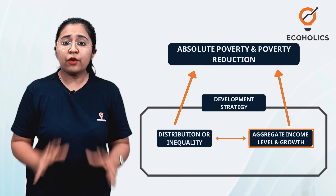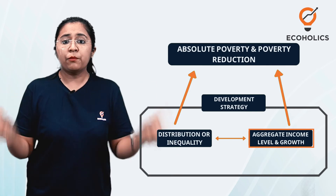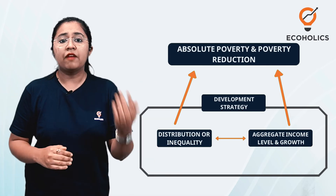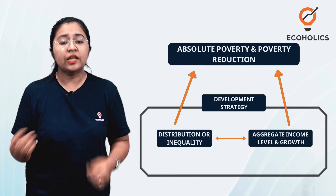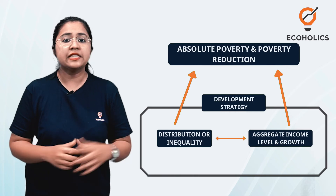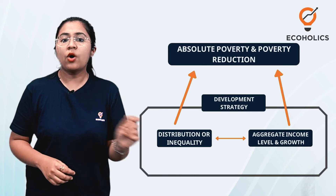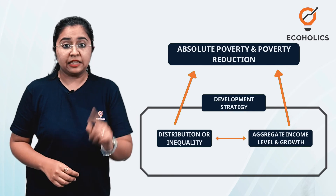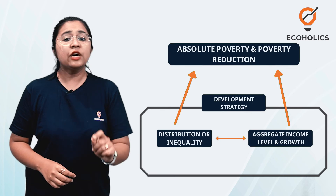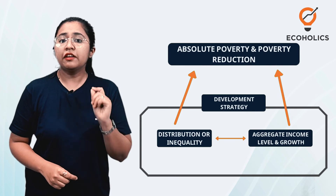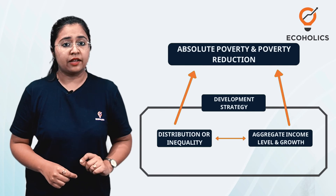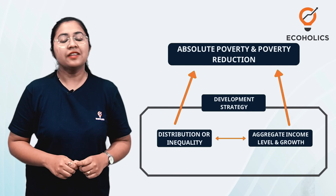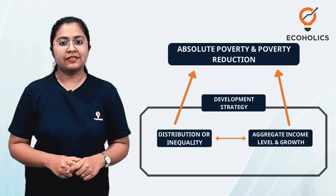The arrows pointing out of absolute poverty, growth, and inequality in the triangle represent cause and effect relationships. In the model, inequality and growth affect each other, and both of them affect absolute poverty.